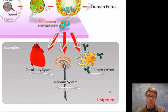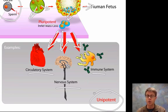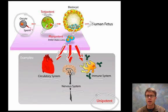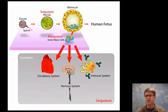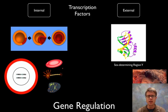Once cells have decided what cell they're going to become, then they're unipotent — they can't become any other cell. They've differentiated at that point, and it's rare that they're able to de-differentiate. There are some organisms, like amphibians, and some healing processes where cells can go from unipotent back to pluripotent. But most of our cells can't do that, which is why it's a really neat area of research.